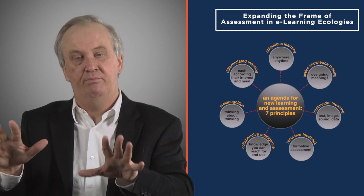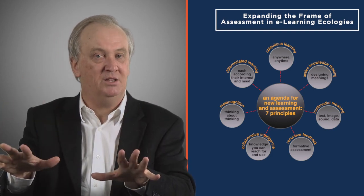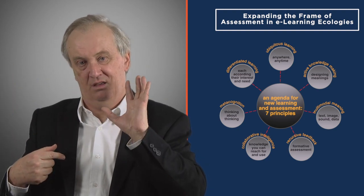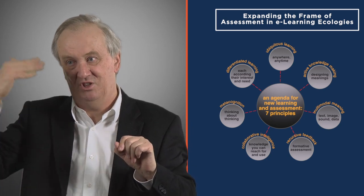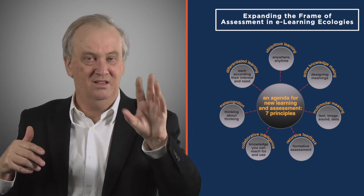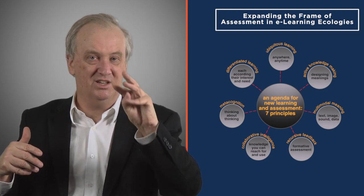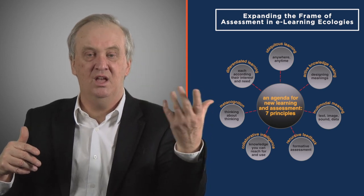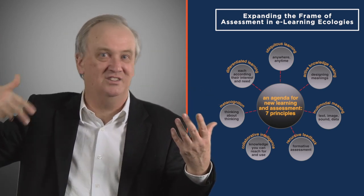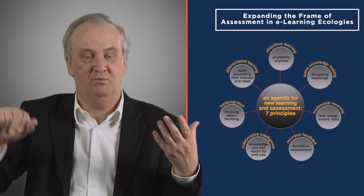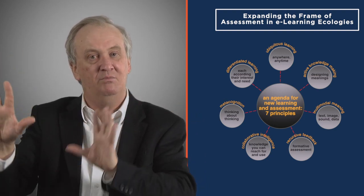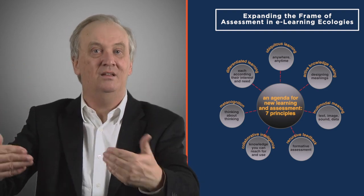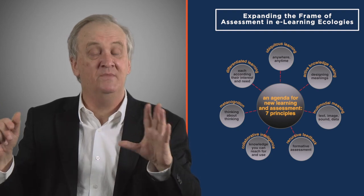We can also make metacognition a much bigger part of the process. For example, I do my work while looking at the rubric. On one side of my screen might be content about the topic I'm working on — say, the French Revolution — while on the other side it's about causes, facts, evidence, and that kind of analytical thinking. Metacognition can be a big part of the process by building students in as self-assessors and peer assessors.